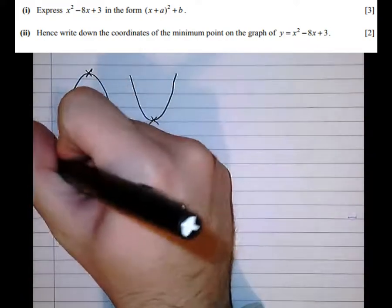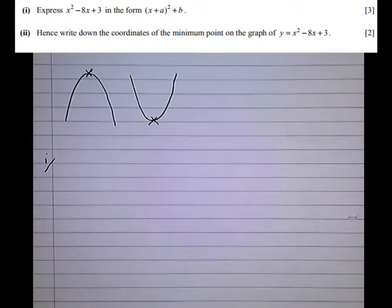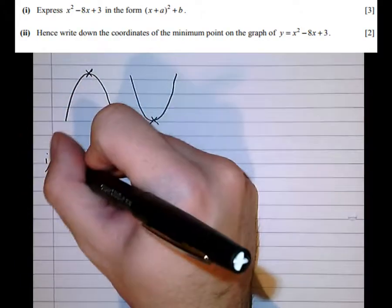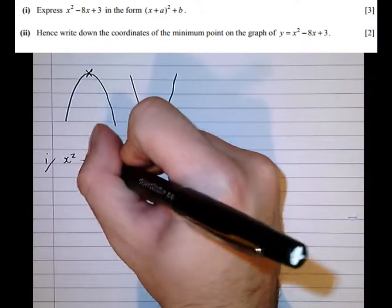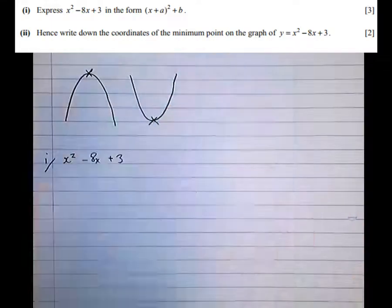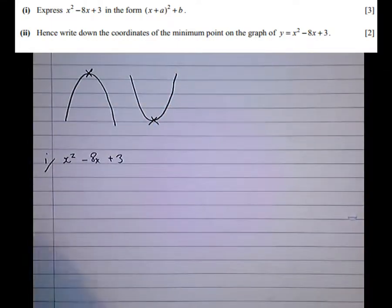So let's have a look at the question. The first part is asking us to express x squared minus 8x plus 3 in that form there or complete square form as it's known.